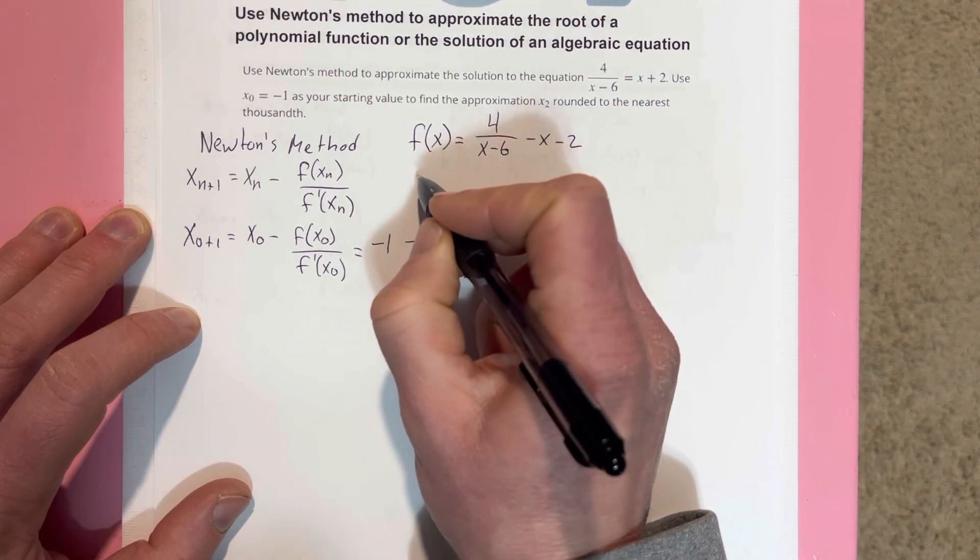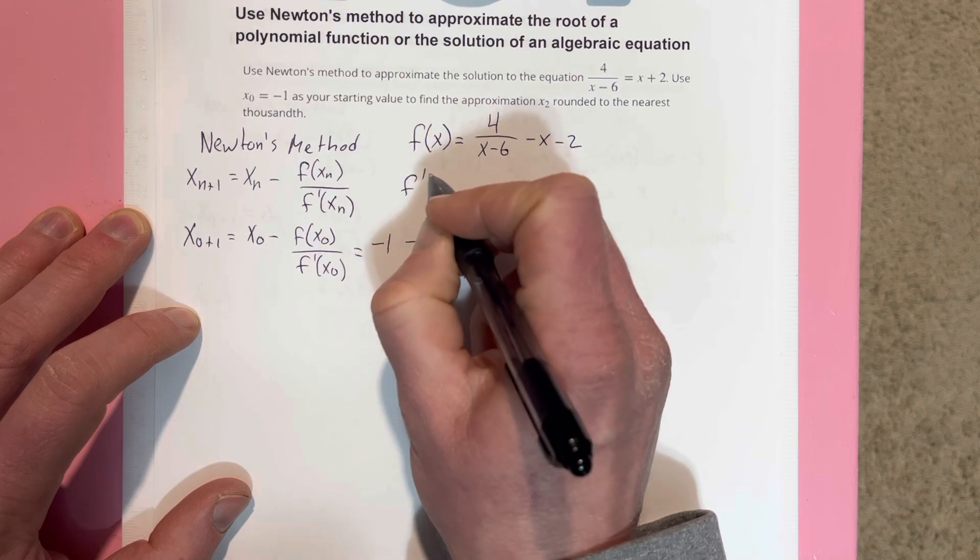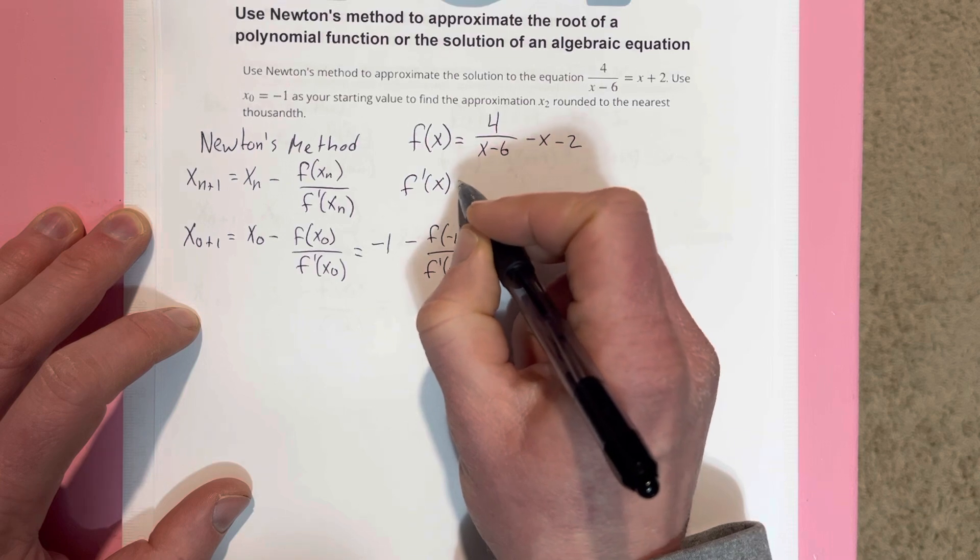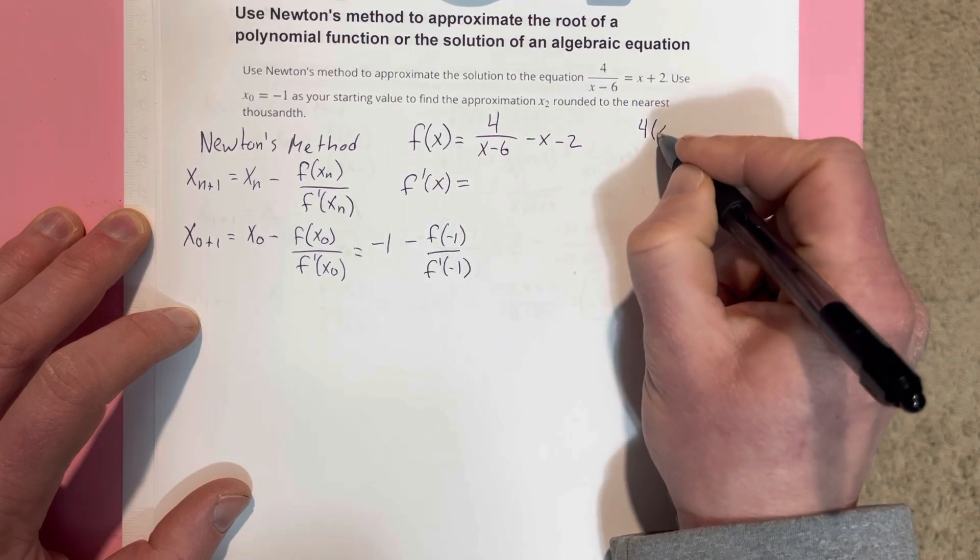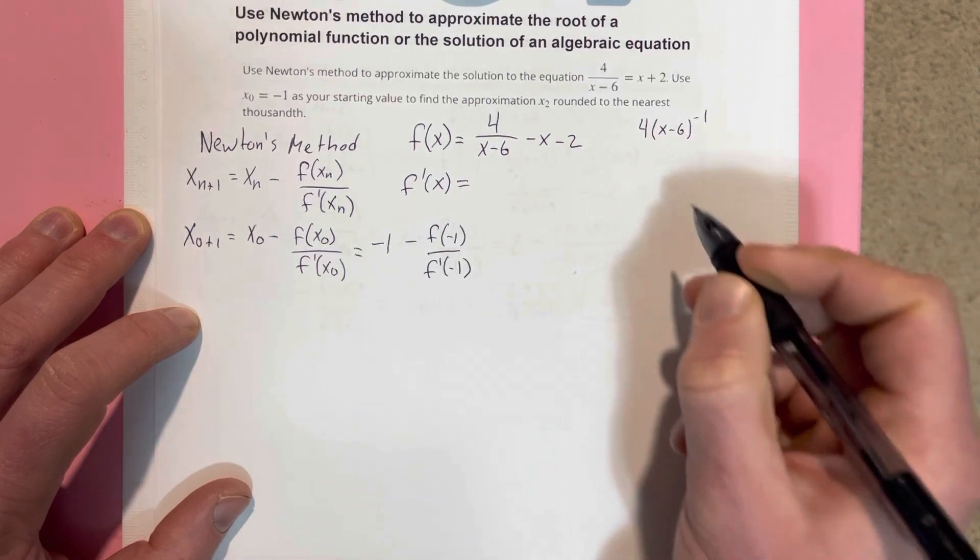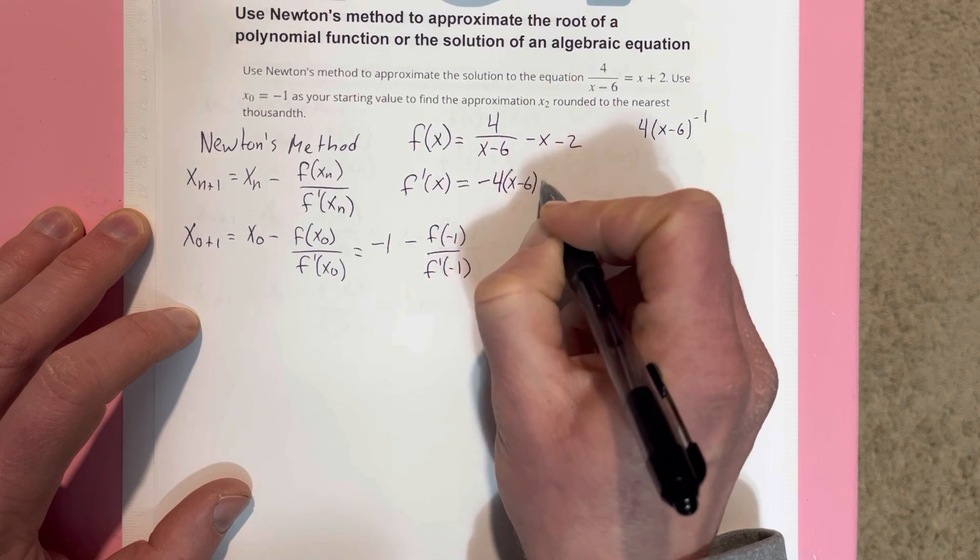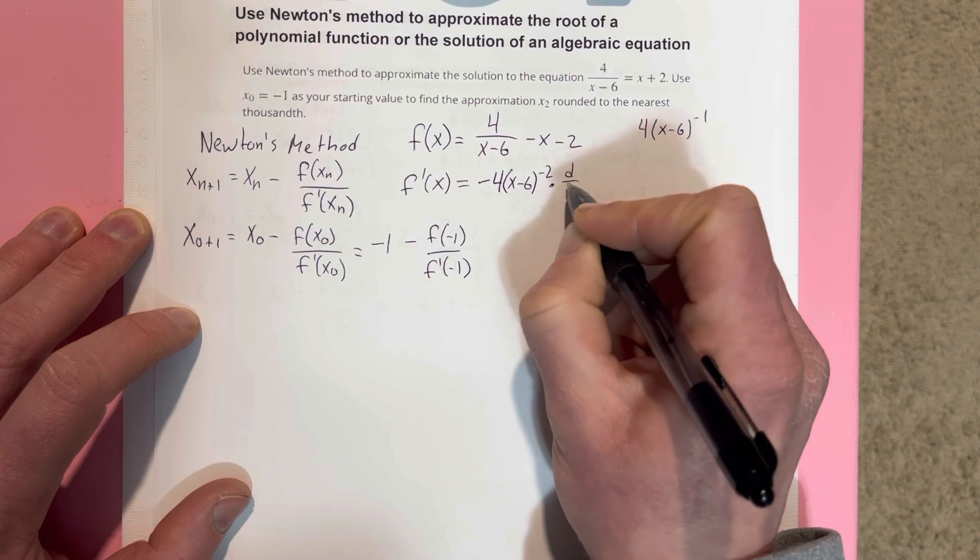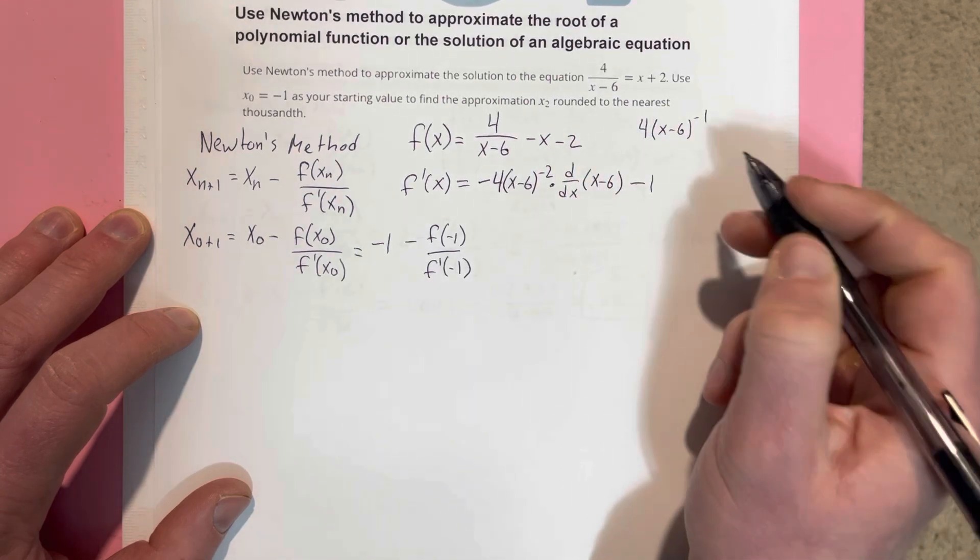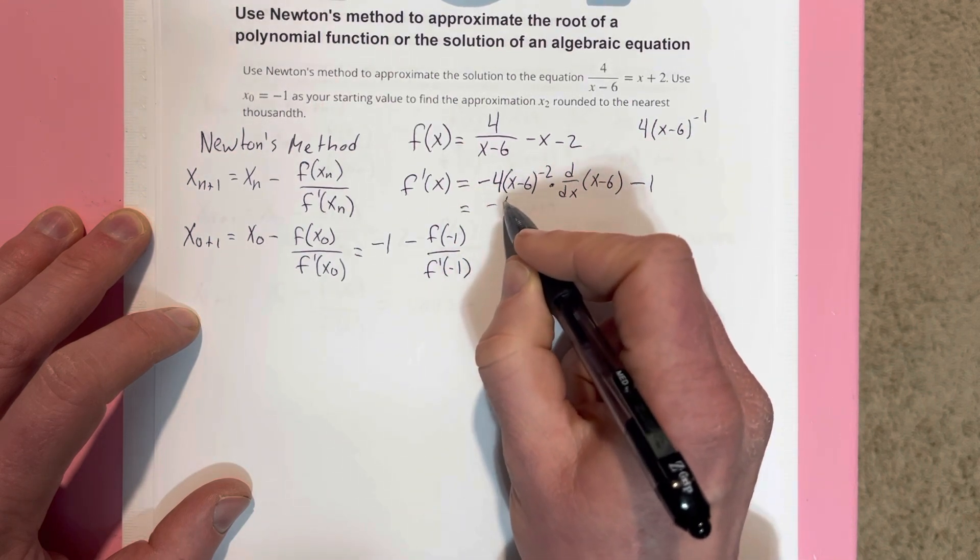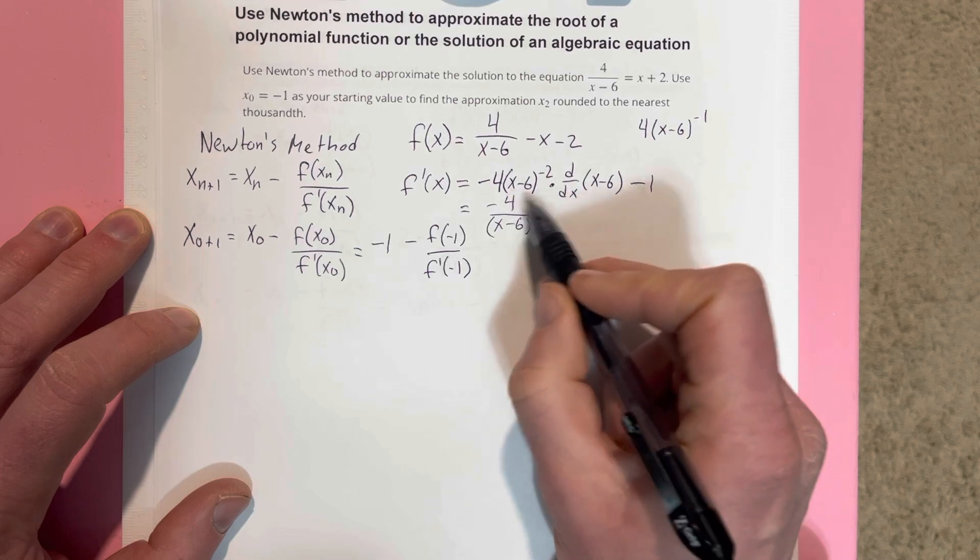Then I'm going to take the derivative of this. f'(x) is going to equal... I'm going to rewrite this piece. That would be 4 times (x - 6) to the negative 1 power. When I take the derivative of this, I would get negative 4(x - 6)^(-2) times the derivative of the inside, which is x minus 6, minus 1. The derivative of negative 2 is constant, so I'm going to write that as equal to negative 4 over (x - 6) squared minus 1.